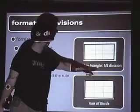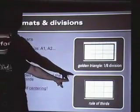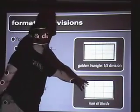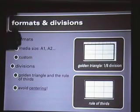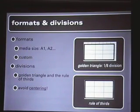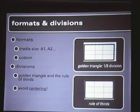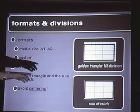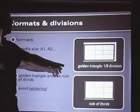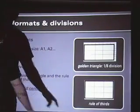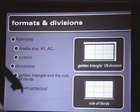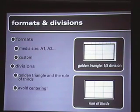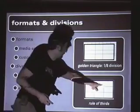Two basic rules: the golden triangle and the rule of thirds. Basically, the rule of thirds is a photographic principle — don't put objects, for example in visualizations and presentations, in the center of the paper or the center of the screen. Never. Always try to put them to the side. All new digital camera models have the option to turn on the rule of thirds grid on the screen, showing the division.